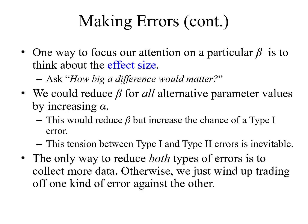How big a difference would matter? We could reduce beta for all alternative parameter values by increasing alpha. When we increase alpha, the level of significance increases, meaning the defective proportion in production goes up. Alpha and beta work in opposite directions — when one goes up, the other goes down. So increasing alpha reduces beta but increases the chance of a type 1 error, while the chance of a type 2 error decreases.